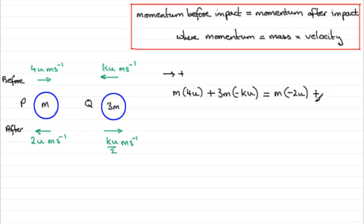Plus, because we're looking at the total momentum. Go to Q now. Its mass is 3m. And we multiply it by its velocity. And its velocity is ku over 2. It's in the plus sense. So we've just got ku over 2.